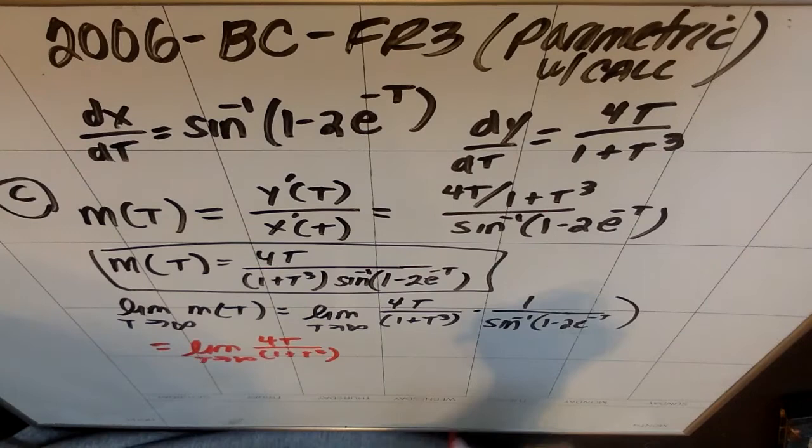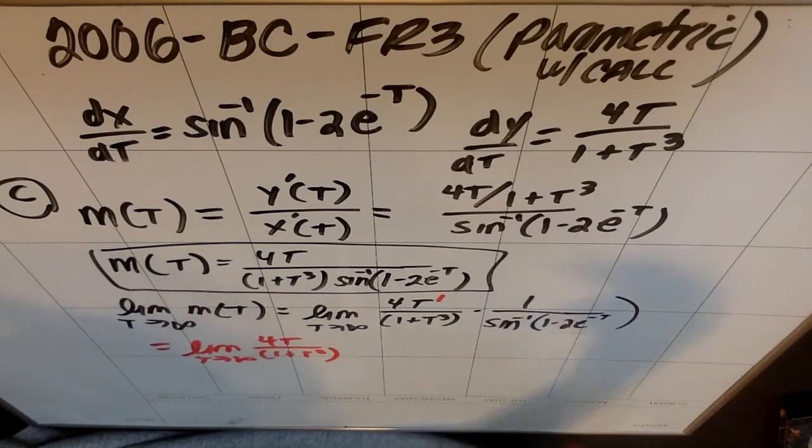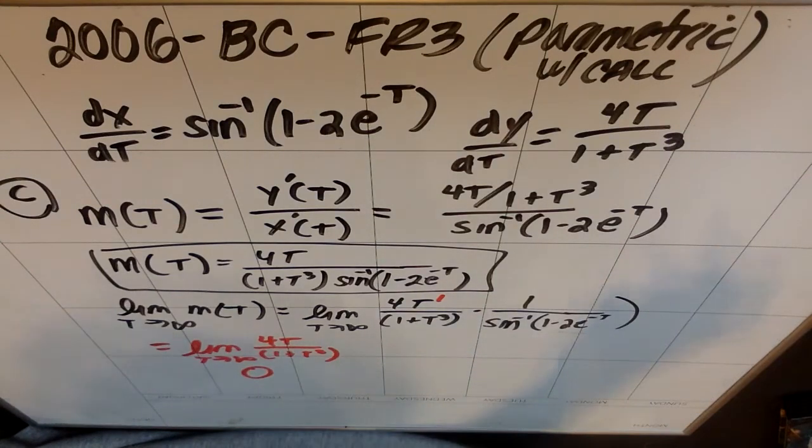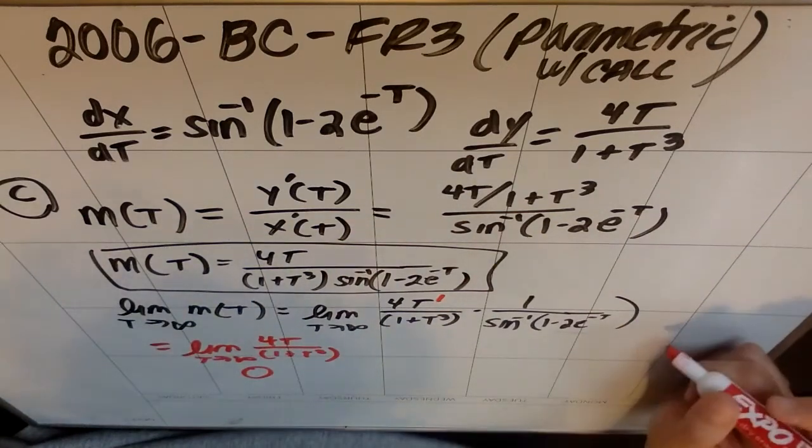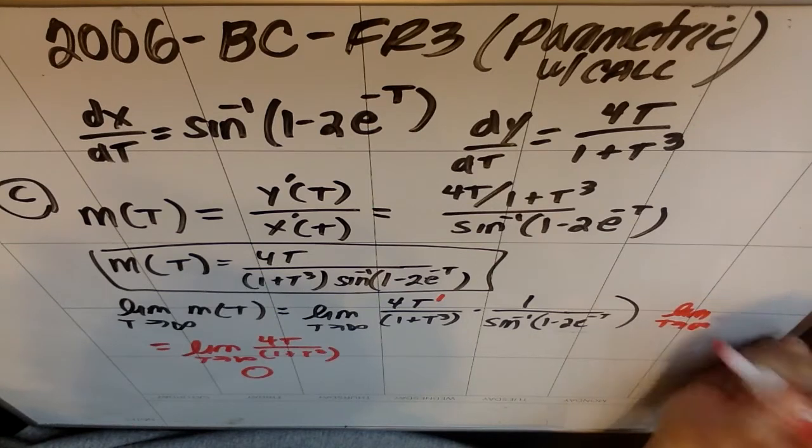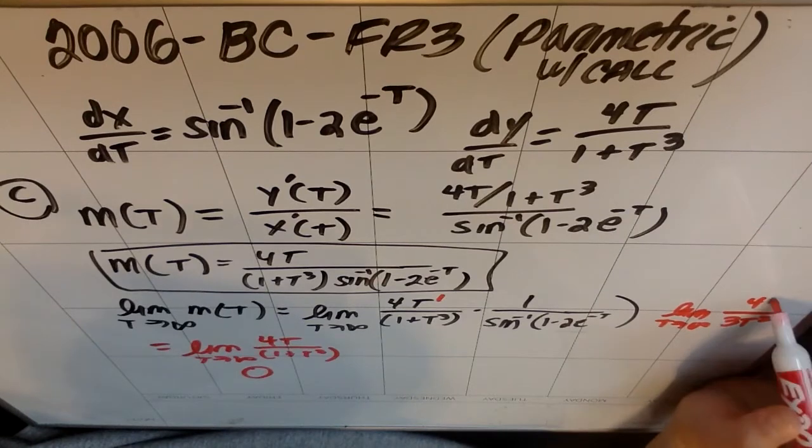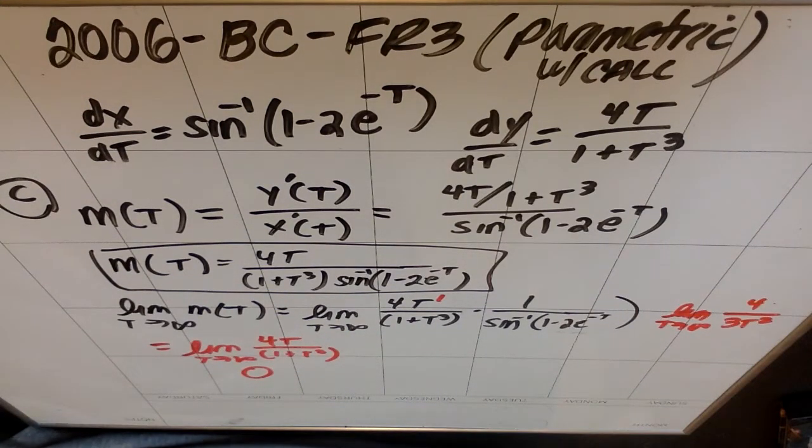Now you can either use L'Hopital's to figure out that this is zero, or you can use some knowledge you probably have from your algebra two class. Essentially, horizontal asymptotes for rational functions, which are polynomials over other polynomials, work in such a way that if the denominator degree is larger than the numerator degree, that this guy approaches a zero. If you needed to do L'Hopital's to figure that out, the limit as t approaches infinity, the derivative of the top is 4, the derivative of the bottom is 3t squared. If you plug in infinities, you get 4 over infinity, which indeed is zero. So that piece is fine.